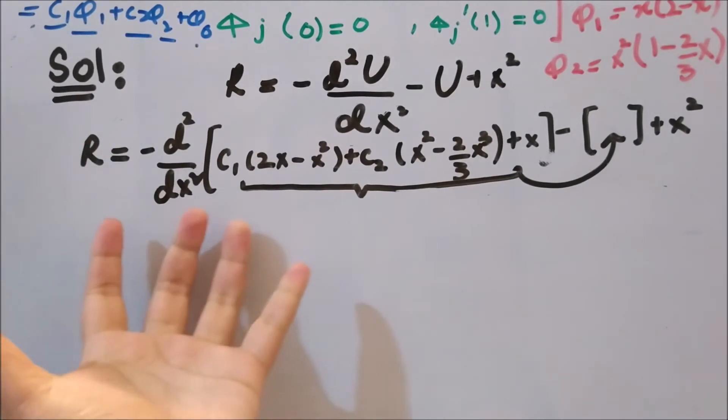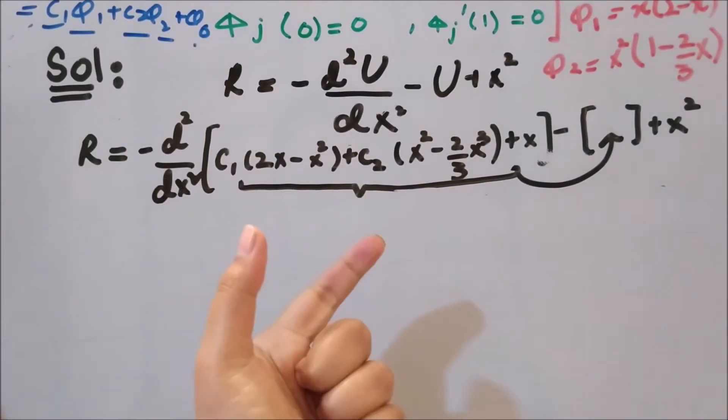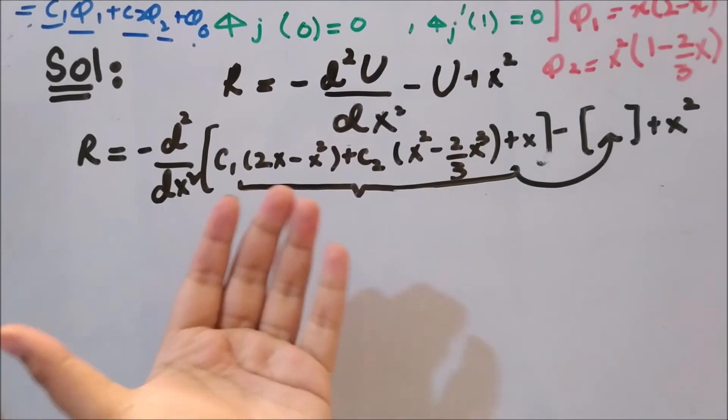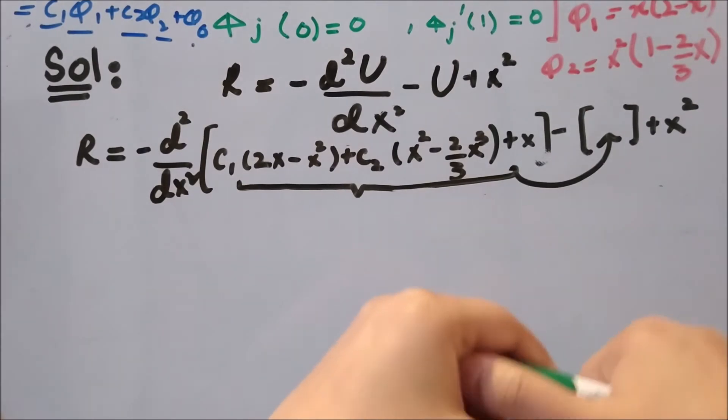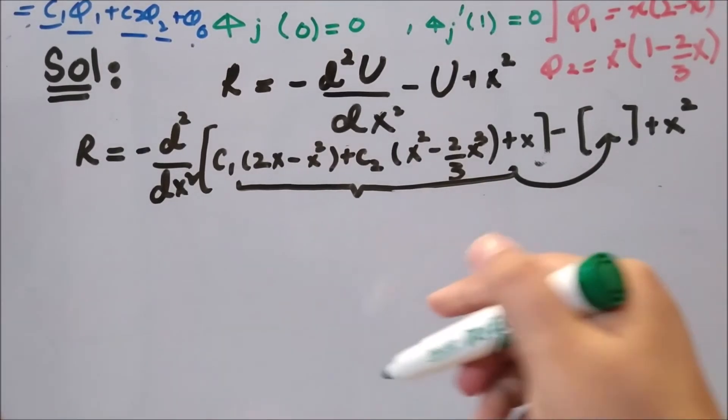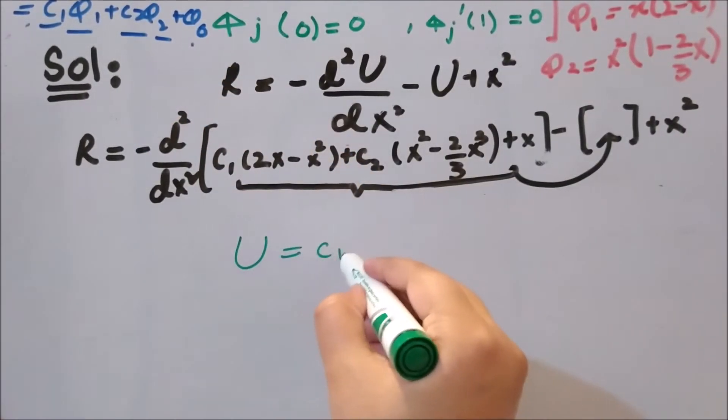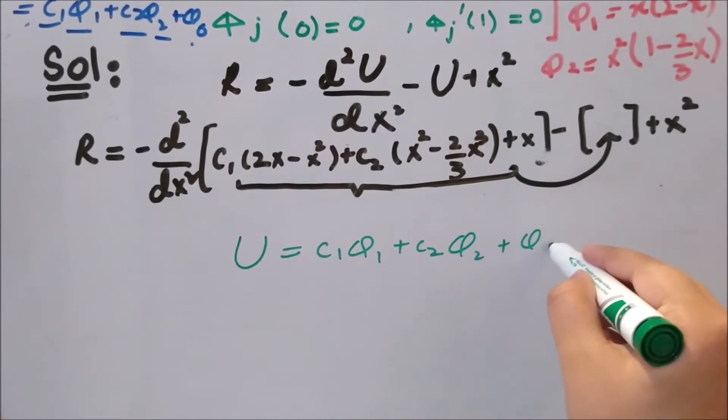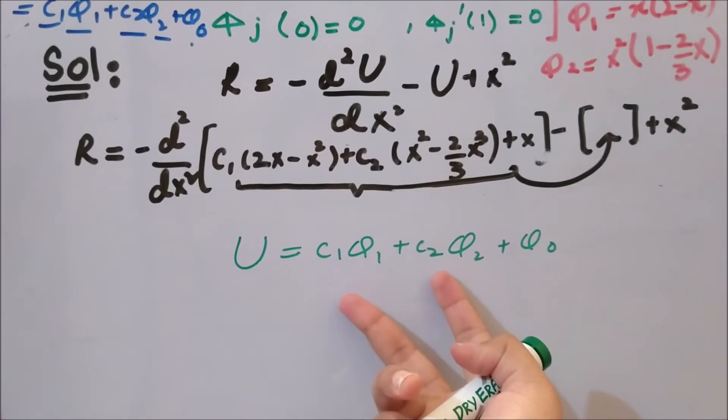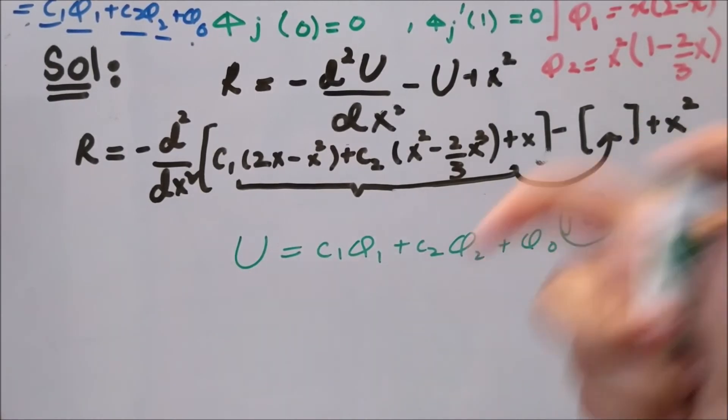We have the residual here. In the collocation method, we have to put the residual at certain points that we have according to the nodes we have. We have assumed that J equals two, so we have two nodes, which means that U equals c1 phi1 plus c2 phi2 plus phi naught. We have c1 and c2, phi1 and phi2, because we have J equal to two. We have two nodes.